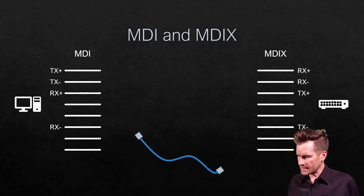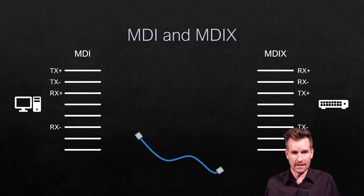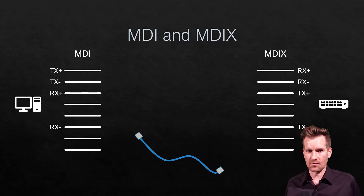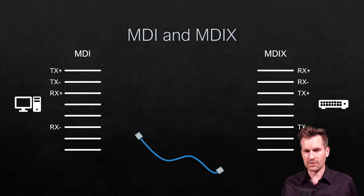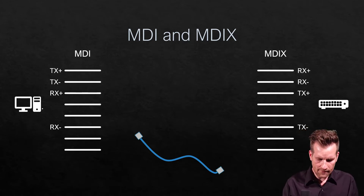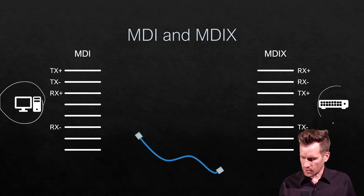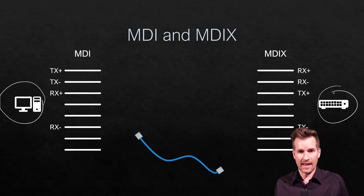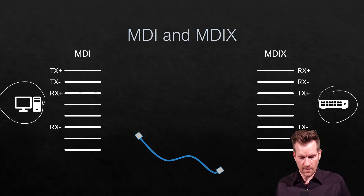MDI stands for Medium Dependent Interface, and the X at the end means it's crossed over. Here I have two pieces of equipment: a computer, which functions as an MDI, and a switch, which has MDIX interfaces on it.